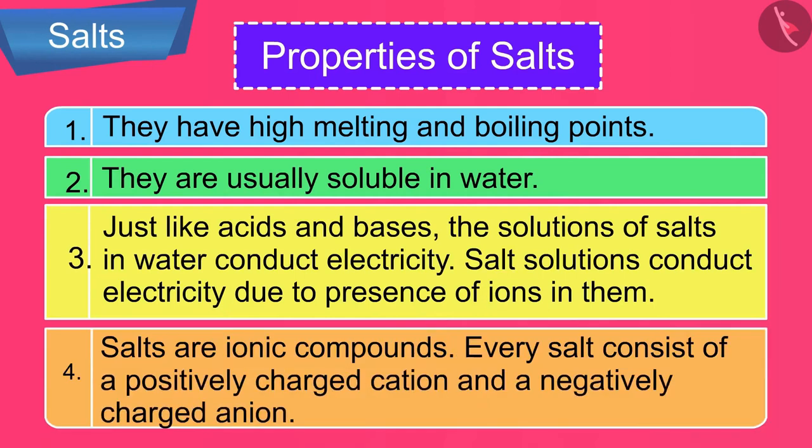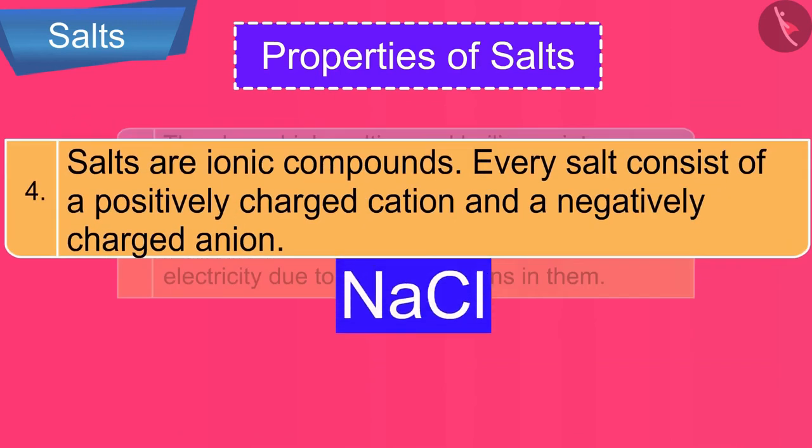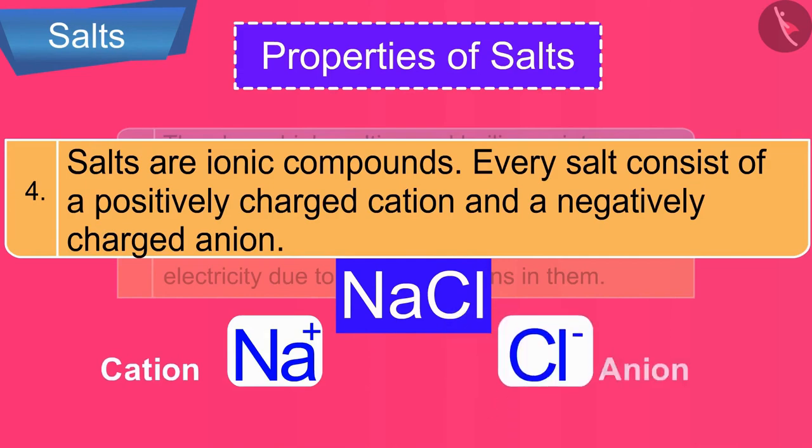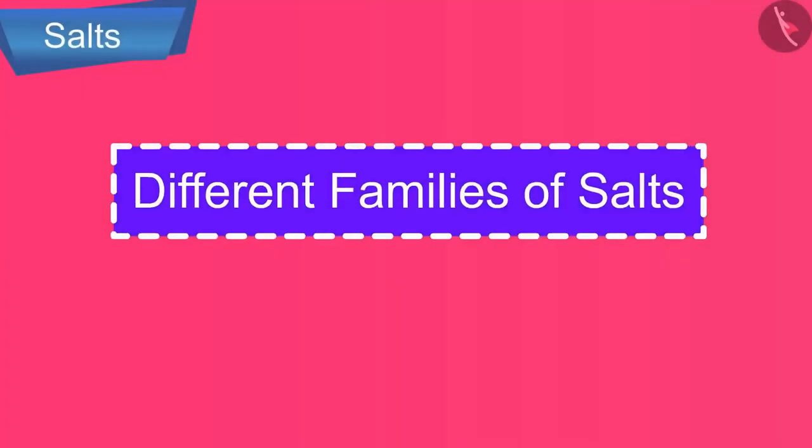Salt solutions conduct electricity due to the presence of ions in them. Salts are ionic compounds. Every salt consists of a positively charged cation and a negatively charged anion. For example, a salt NaCl has Na plus cation and Cl minus anion.